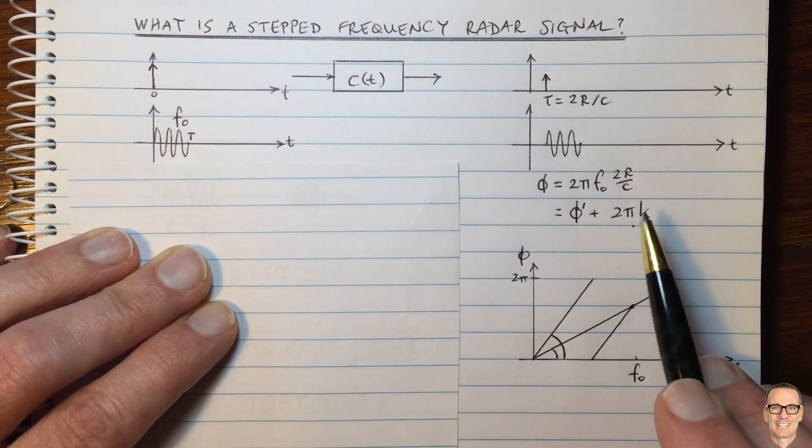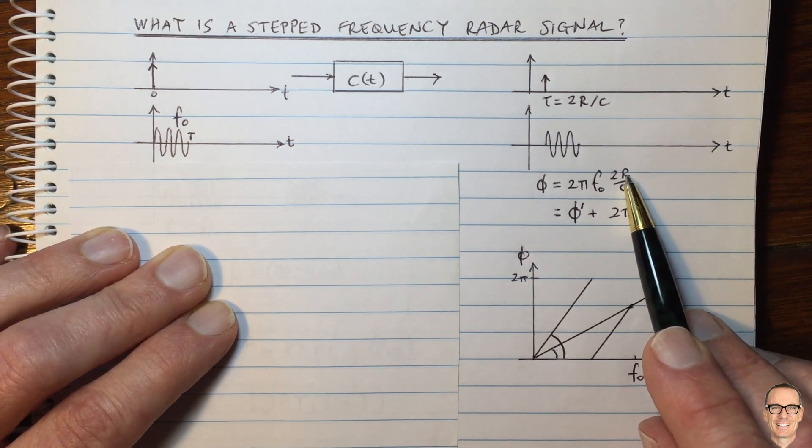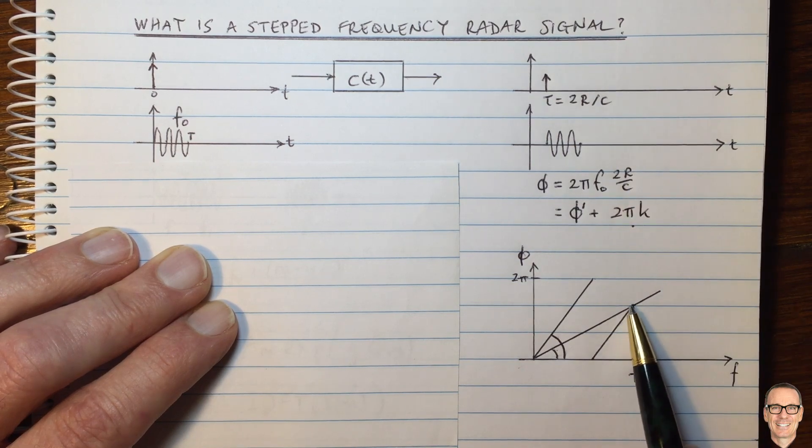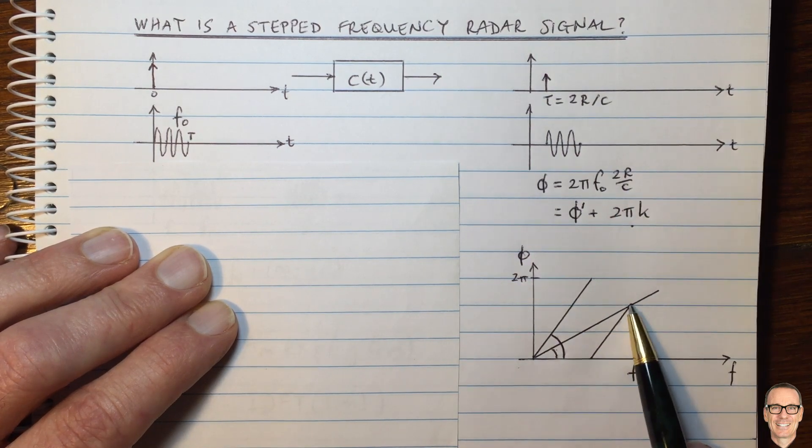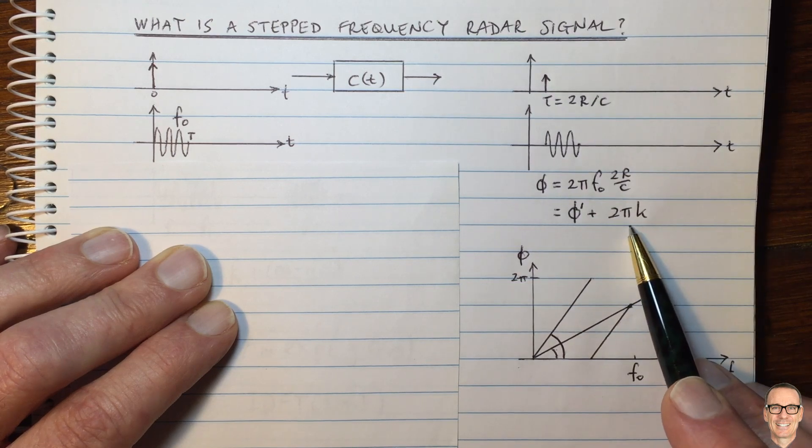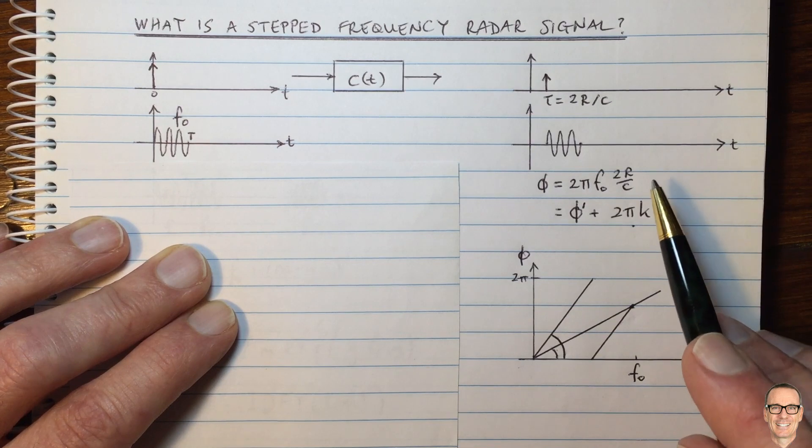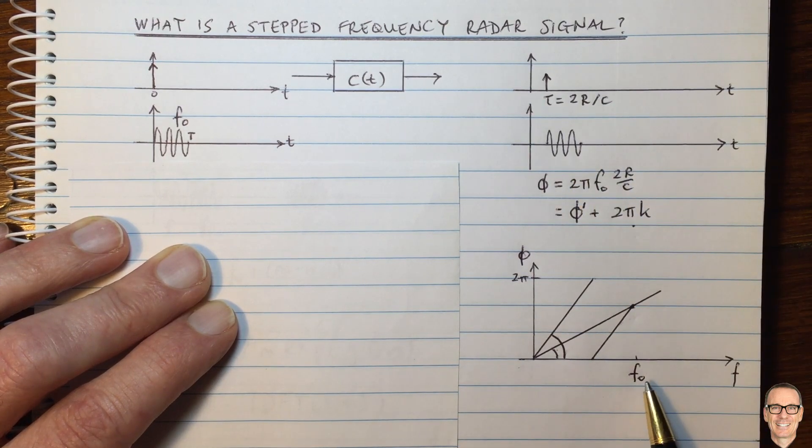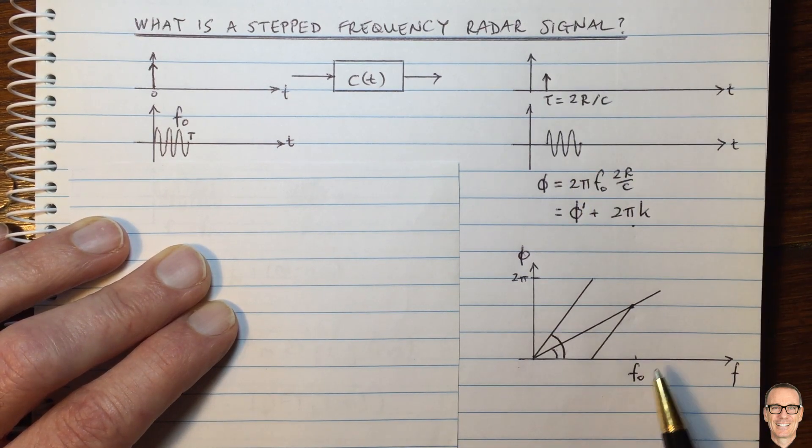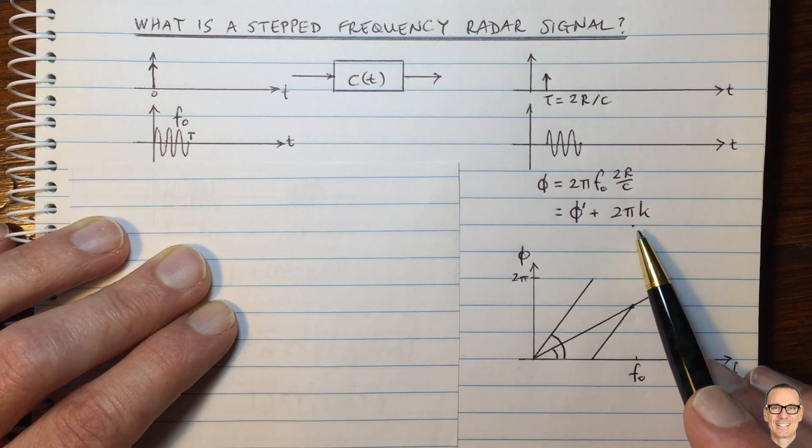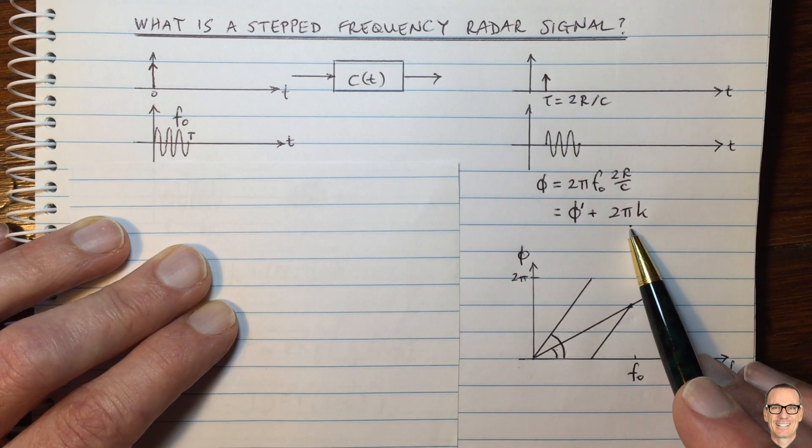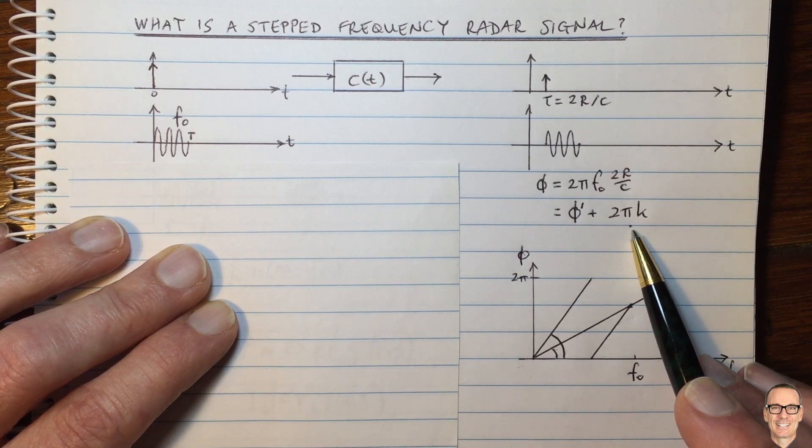So therefore, you only have to move a distance R of the inverse of that, which is 0.6 meters, for you to change from one of these phases to the other one. So that's only 60 centimeters. So that tells you the resolution of this approach if you only have one frequency is you can have an ambiguity every 60 centimeters.